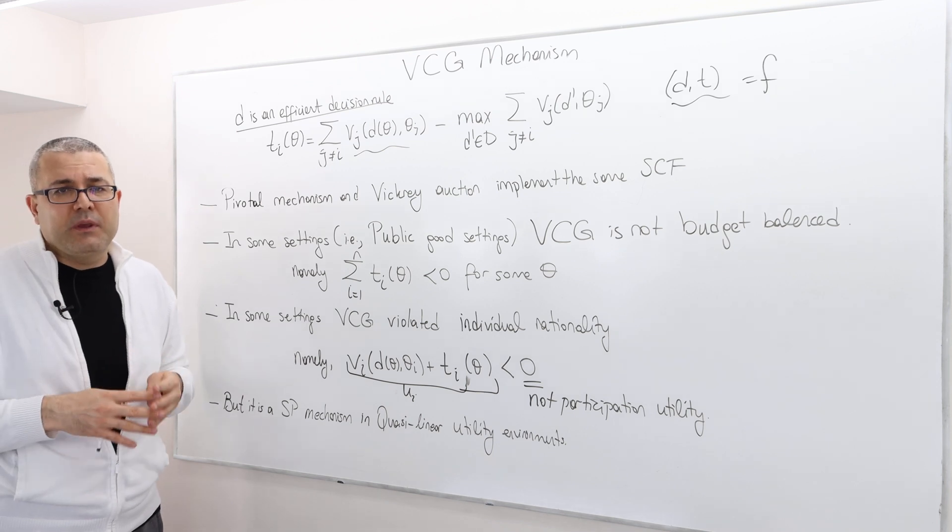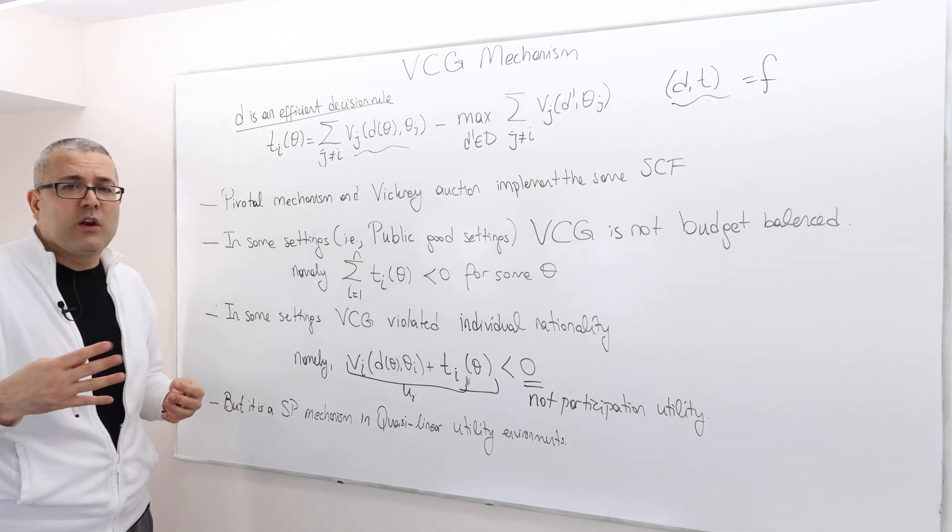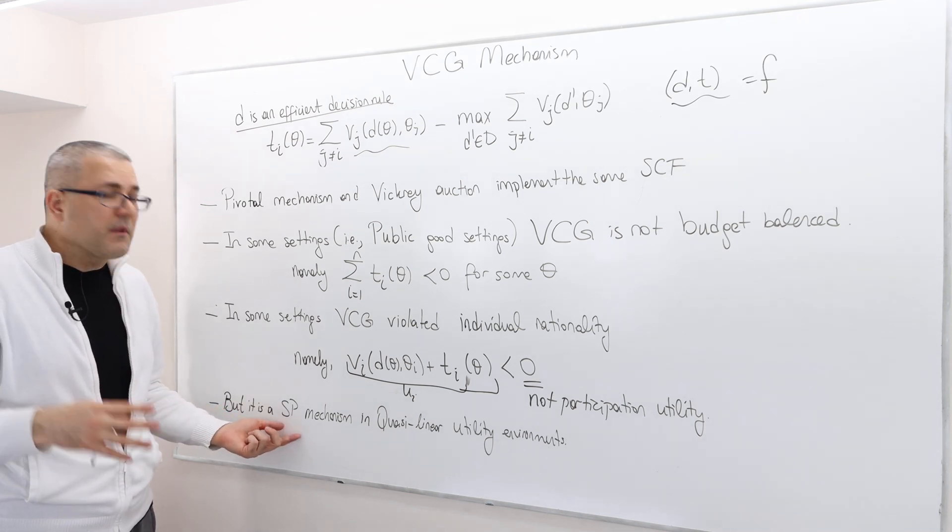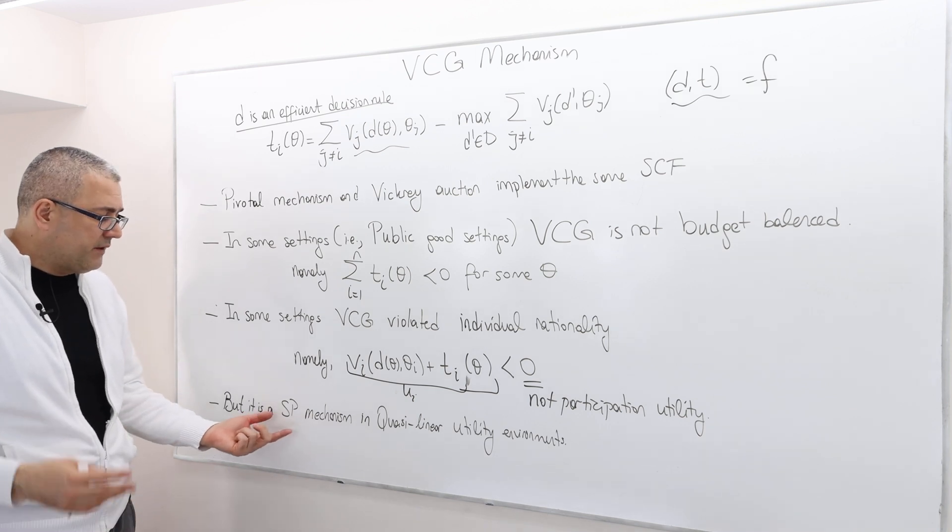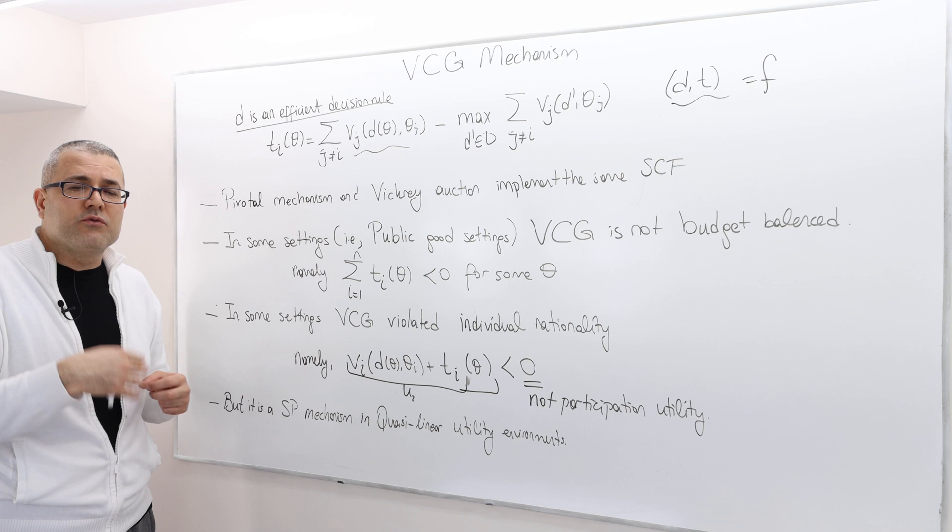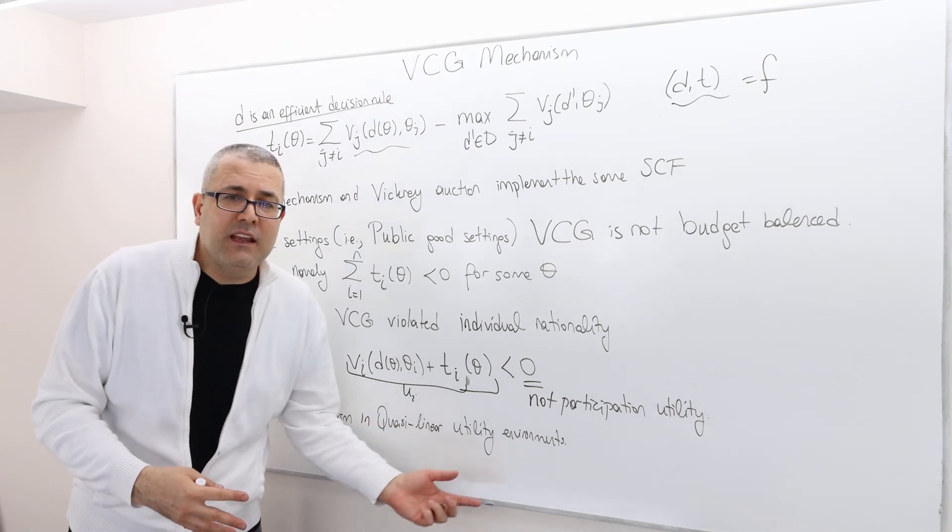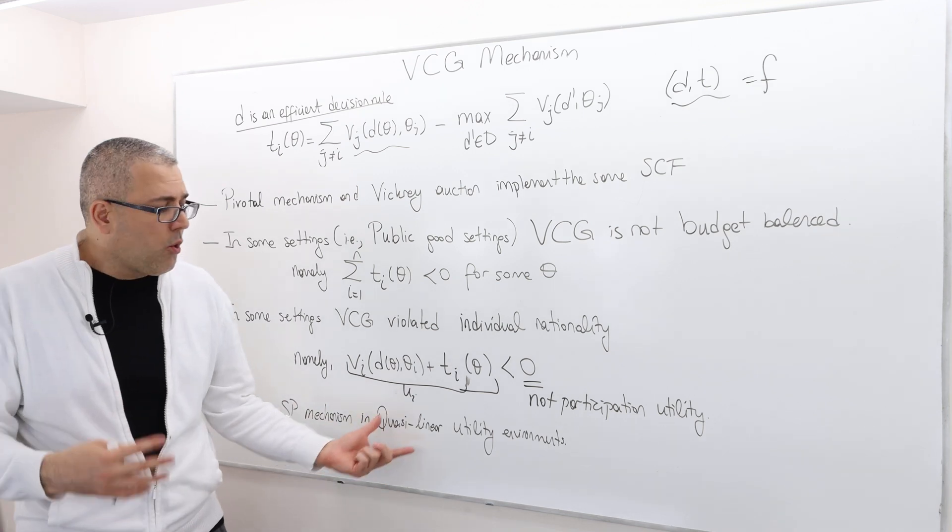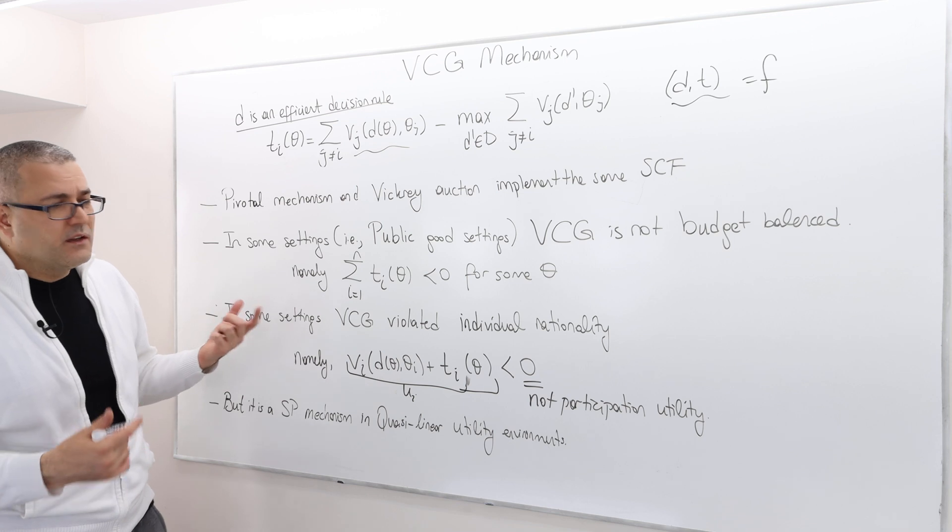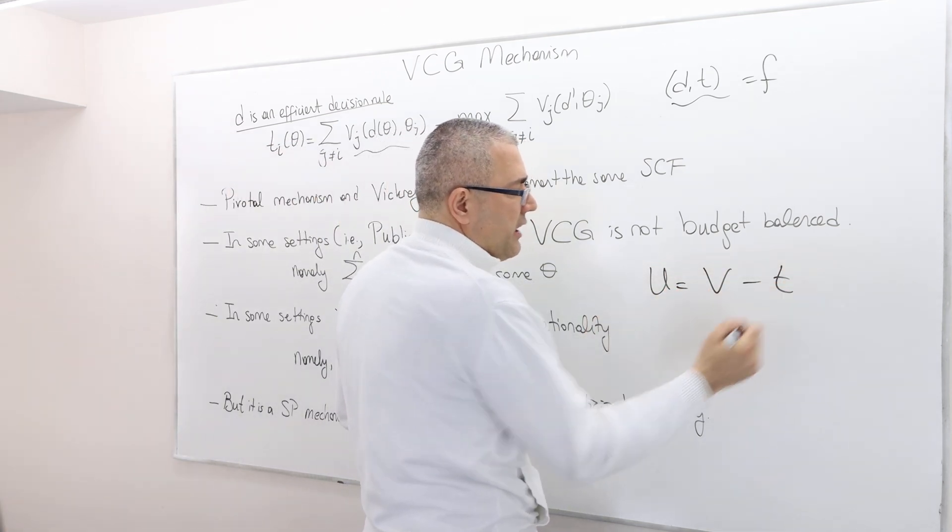So VCG is so to speak not a perfect solution. Well but nevertheless it's not one of the, it's the best solution we have in some environments because it satisfies strategy proofness, everybody is going to reveal their type truthfully. And again this result is true only in quasi-linear utility environments.